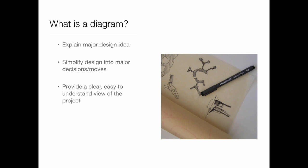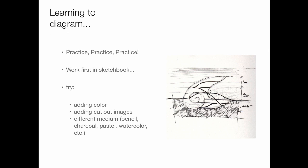You guys in studio — you're in 121, you're doing the Mondrian Museum or something along those lines. When you get to that point, you're going to be responsible for coming up with the design, and when you come up with that design you're going to have to be able to explain it to somebody in a really clear and concise manner. The easiest way, the way architects tend to do this, is through something called a diagram.